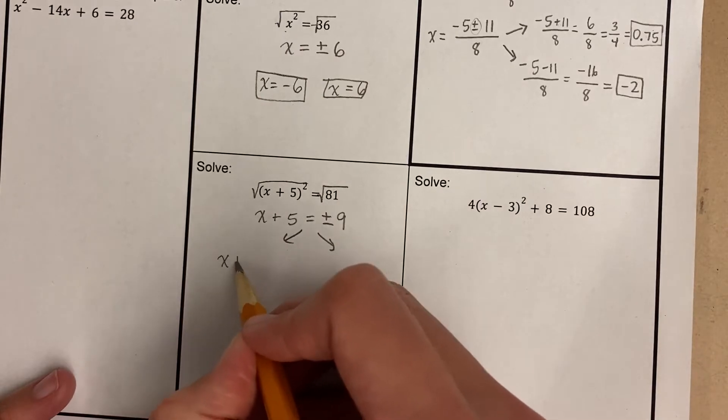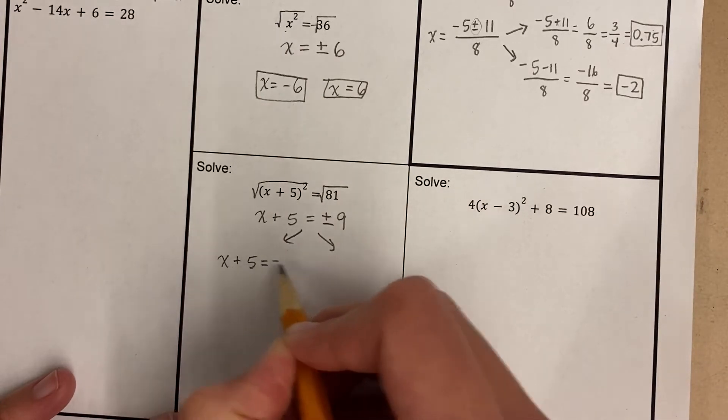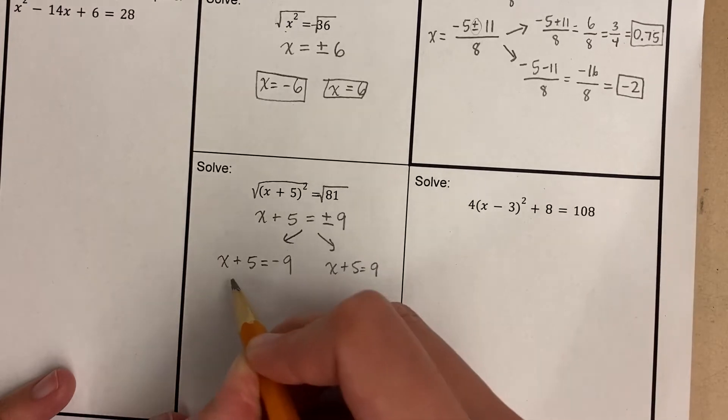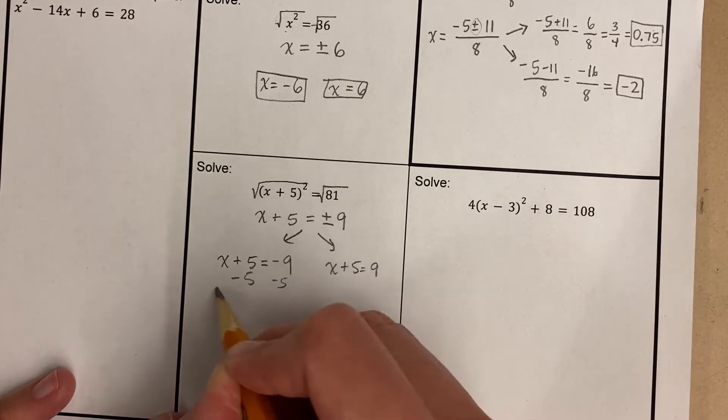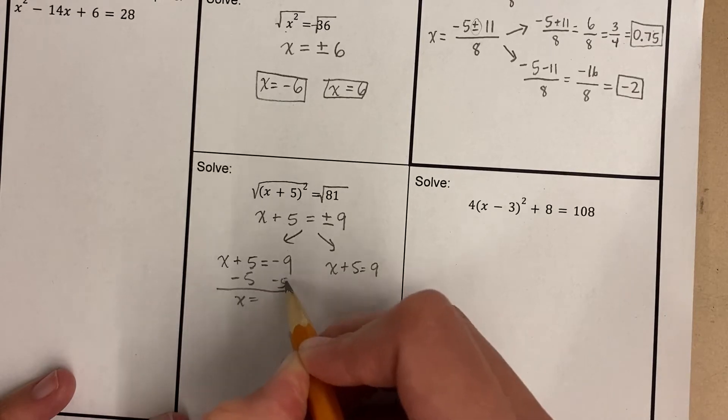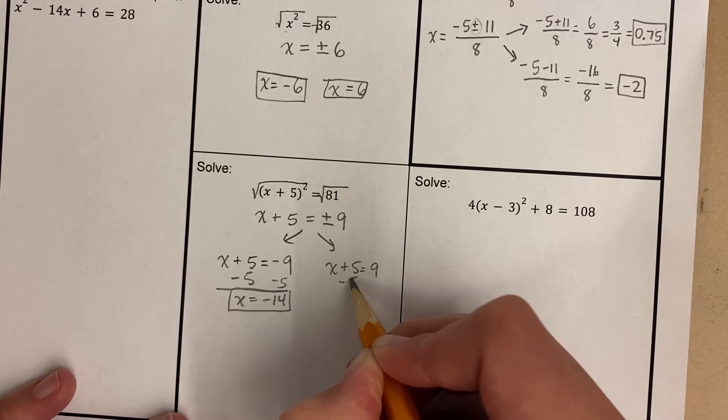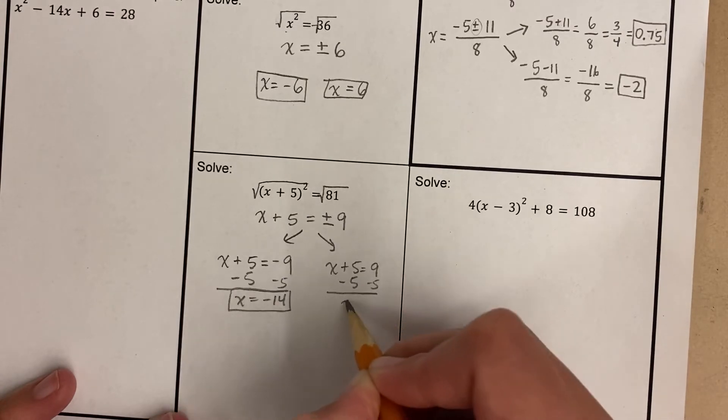x plus 5 could equal negative 9, or x plus 5 could equal positive 9. Negative 9 minus 5 is negative 14. 9 minus 5 is 4.